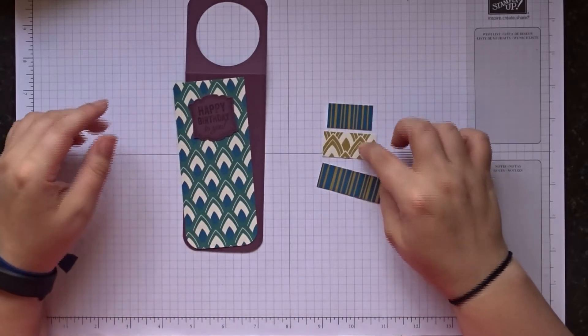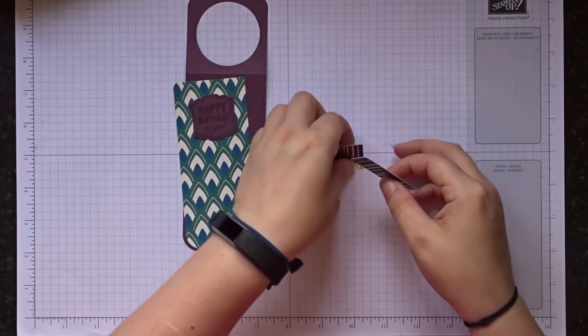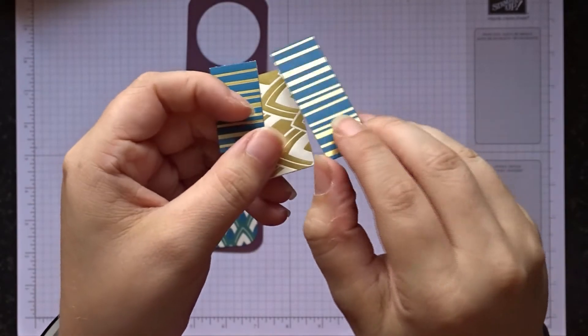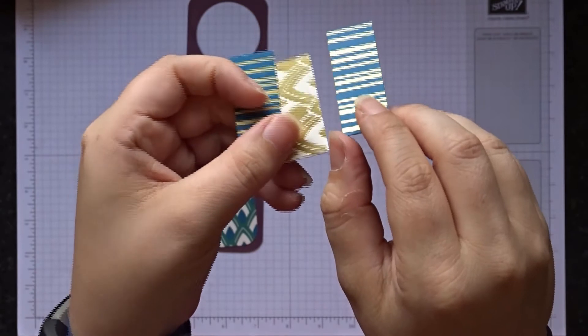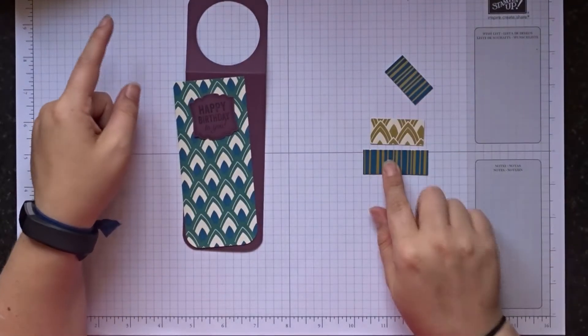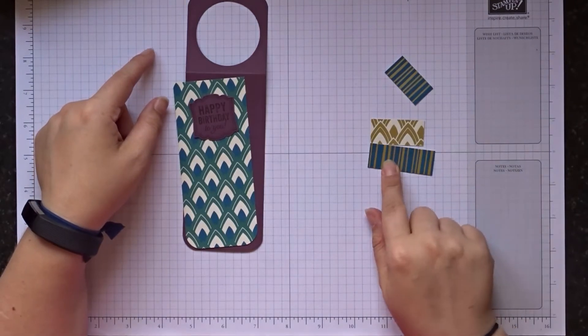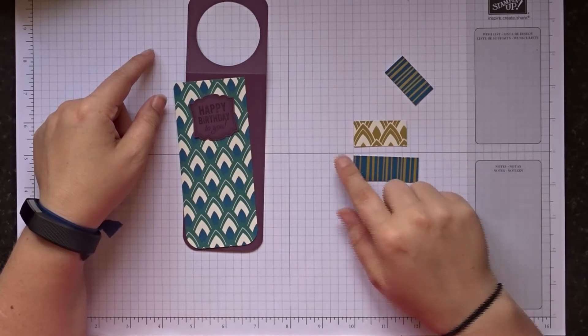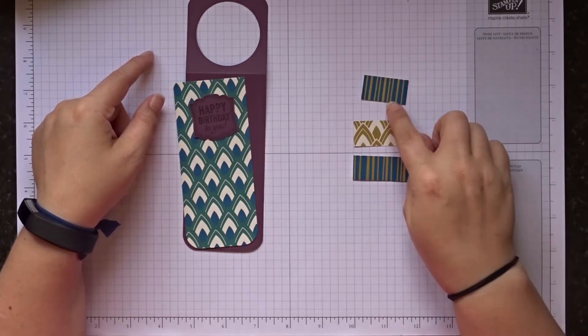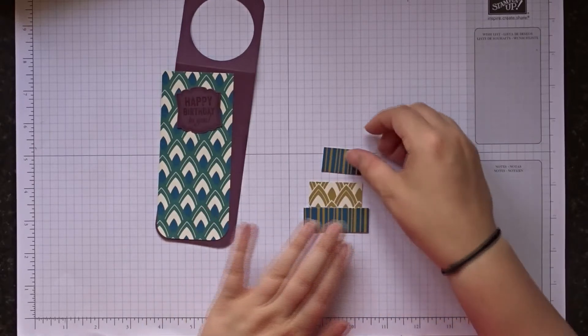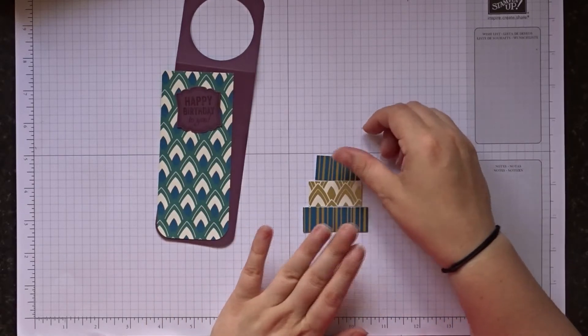So I've got three bits of DSP here, these are the metallic ones. Okay, so I've got three pieces here, two of the same and one that's different. The largest piece I've got is three quarters of an inch by two inches. The next one is three quarters of an inch by one and five eighths and the smallest one is three quarters of an inch by one and three eighths. I am going to stick these together to look like a birthday cake.